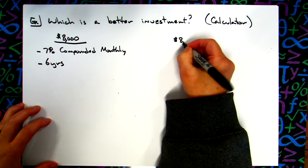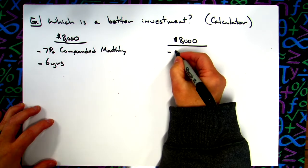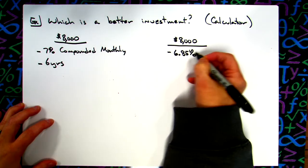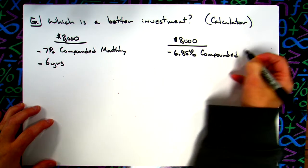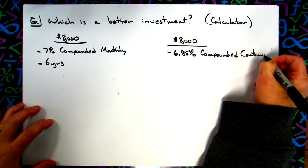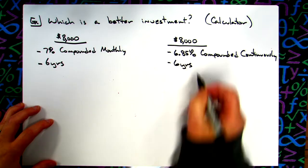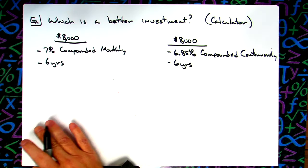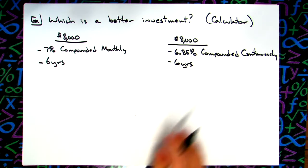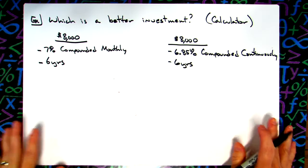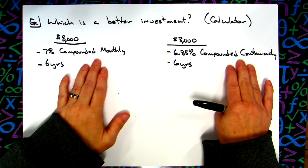Their other option for an investment, they've still got that eight thousand dollars, then they might consider investing it at a six point eight five percent interest which is compounded continuously, and again they're going to leave it in for six years. The question is should they go with this investment or this investment. The key here is in the story problem you're going to look for compounded monthly or compounded continuously, and then that's going to tell you which formula to use.